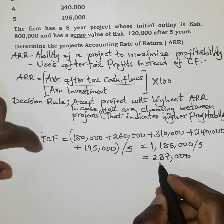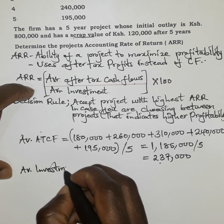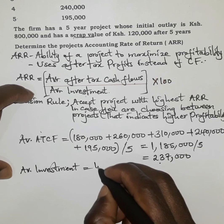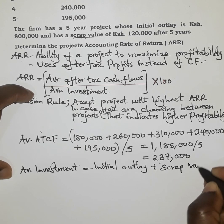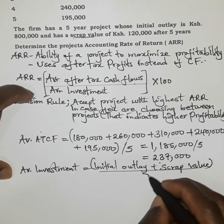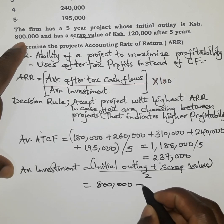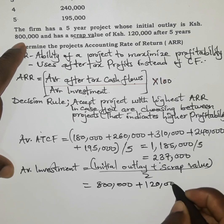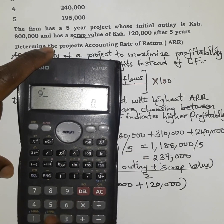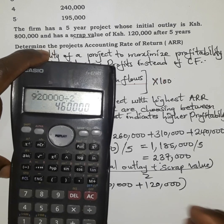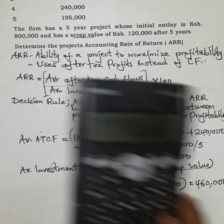Now, the average investment is the initial outlay plus the scrap value, divided by two: 800,000 + 120,000 = 920,000, divided by two, giving us an average investment of 460,000.